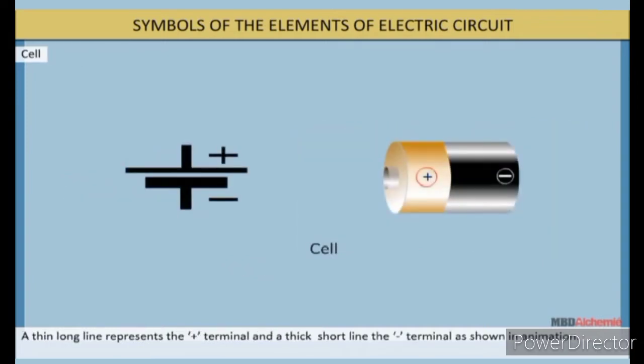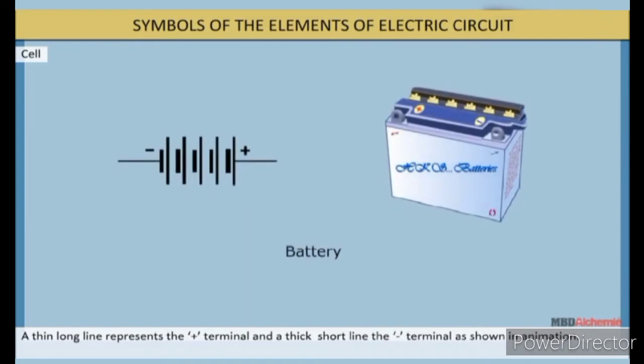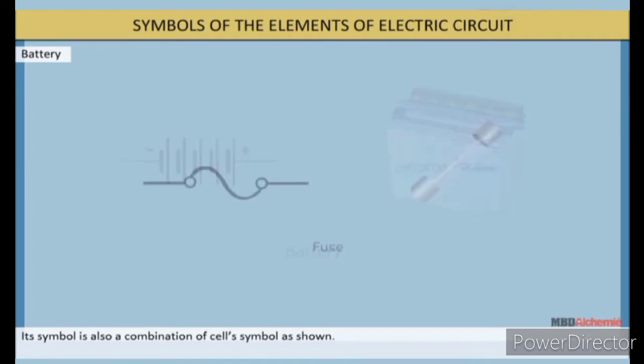Cell: A thin long line represent the plus terminal and thick short line, the negative terminal, as shown. Battery: A combination of two or more cells is called battery. Its symbol is also a combination of cells symbol, as shown.